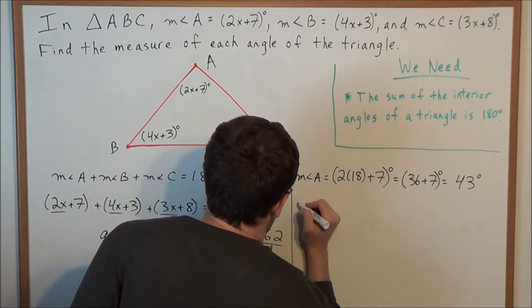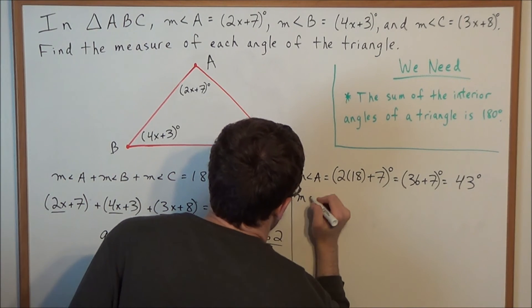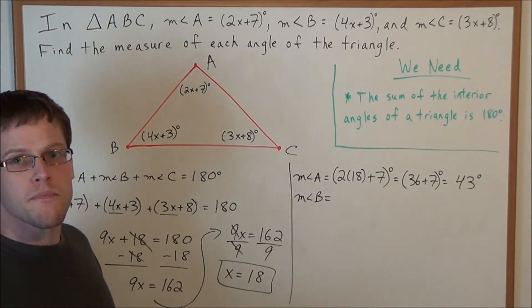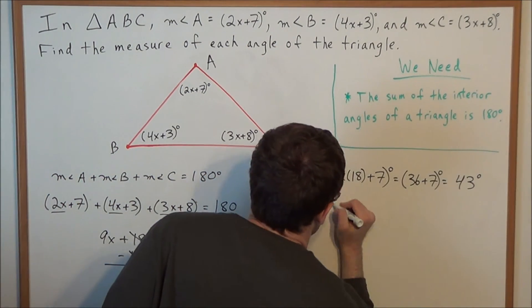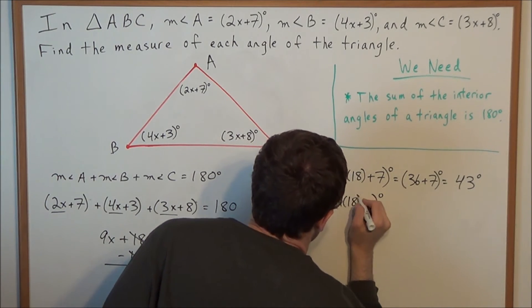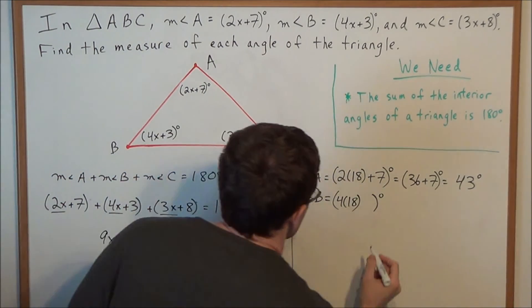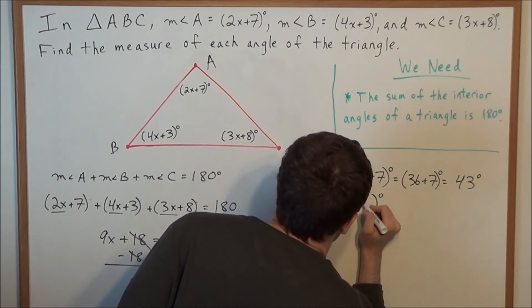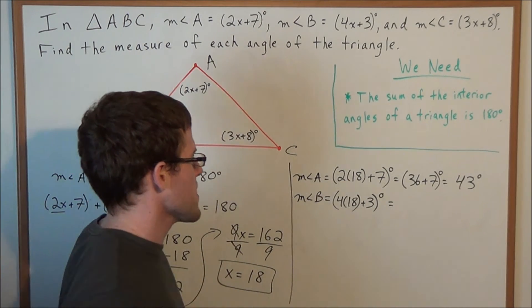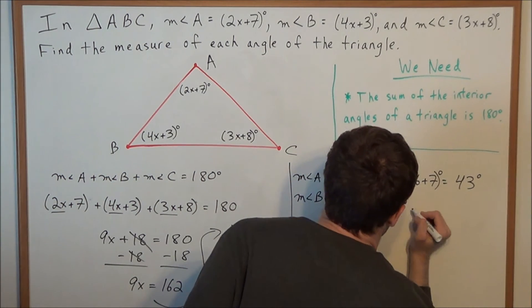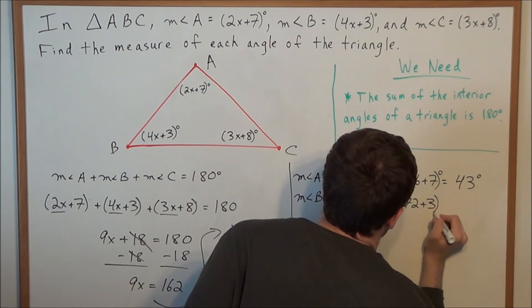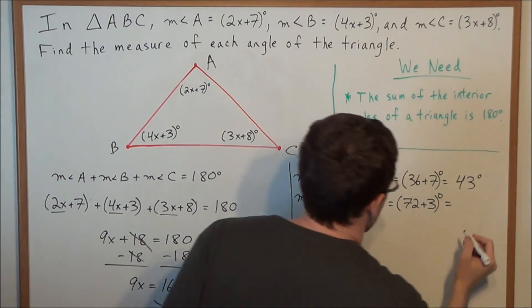For the measure of angle B, we substitute again. The measure of angle B is 4x plus 3 degrees. Since x equals 18, we have 4 times 18 plus 3 degrees. Now 4 times 18 is 72, so we have 72 plus 3 degrees, which gives us 75 degrees.